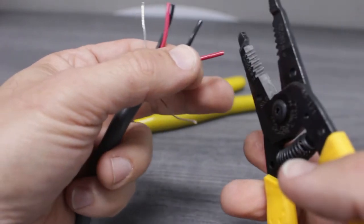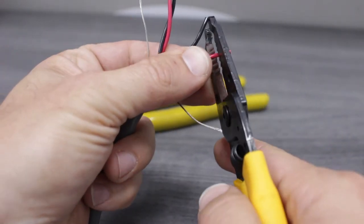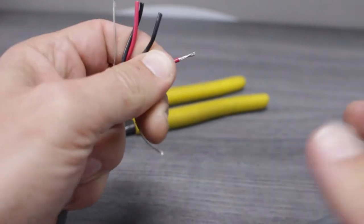After figuring the correct amount of insulation to strip, we'll use our strippers to cut into the insulation, pulling it away from the main section to expose the internal conductors.